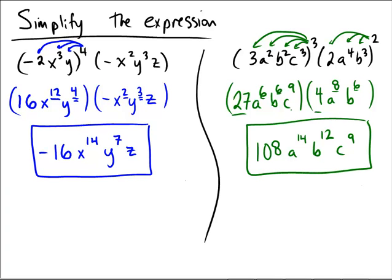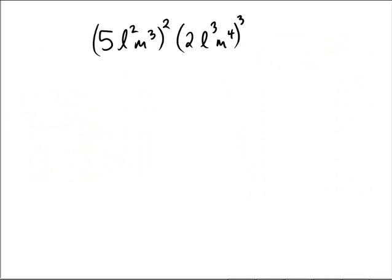Okay, hoping that's enough practice — why don't you try one on your own on this next page? Pause the video and see if you can do this one with l's and m's in it. Assuming you paused and tried it: for the first part, hopefully you got 5 squared which is 25, then l squared squared which is l to the 4th, and m cubed squared which is m to the 6th.